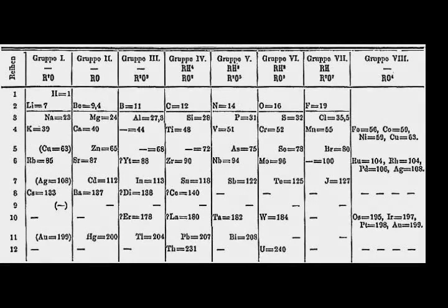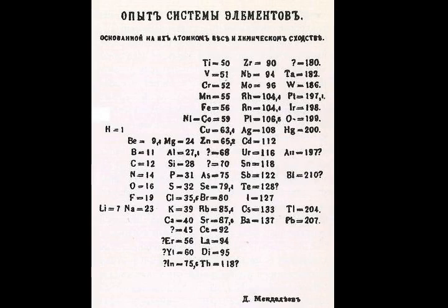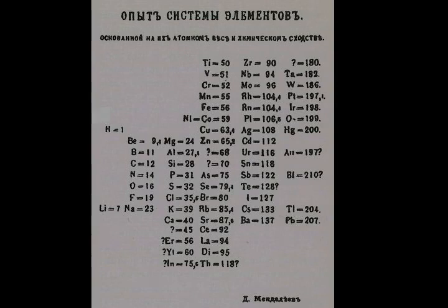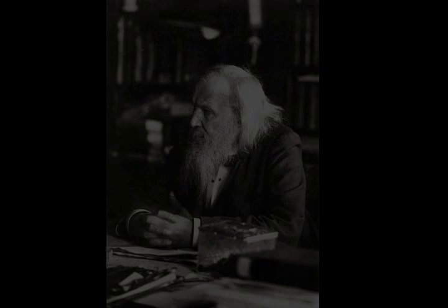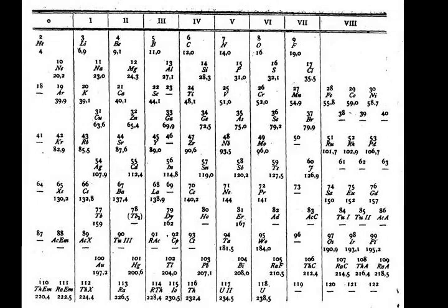In 1875, the French chemist Paul Émile Lecoq de Boisbaudran, working without knowledge of Mendeleev's prediction, discovered a new element in a sample of the mineral sphalerite and named it gallium. He isolated the element and began determining its properties. Mendeleev, reading de Boisbaudran's publication, sent a letter claiming that gallium was his predicted eka-aluminium. Although Lecoq de Boisbaudran was initially skeptical, he later admitted that Mendeleev was correct.